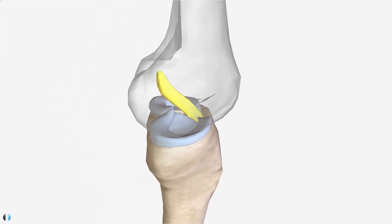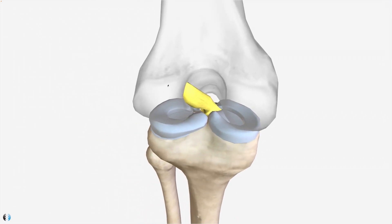If we look at things from a side view, we can see that it originates at the lateral femoral condyle and it inserts onto the anterior surface of the tibia at the intercondylar eminence. If we go ahead and look at the ACL from the back, we can see that lateral femoral condyle attachment and we can see beautifully how it runs right through the centre of the knee.